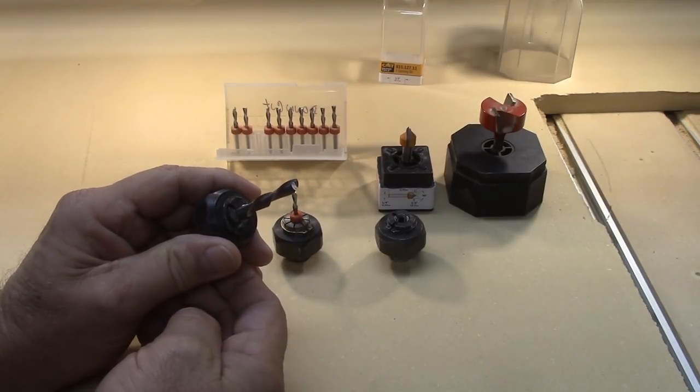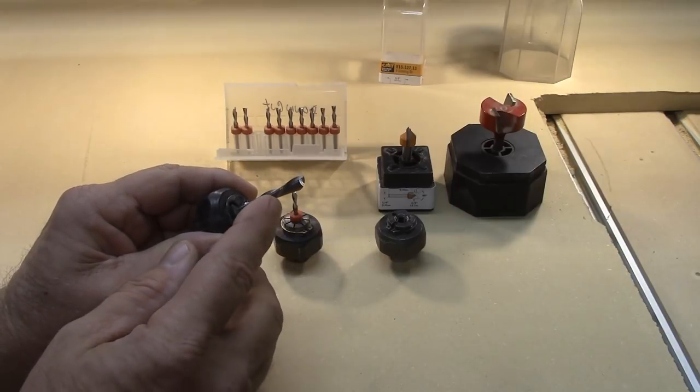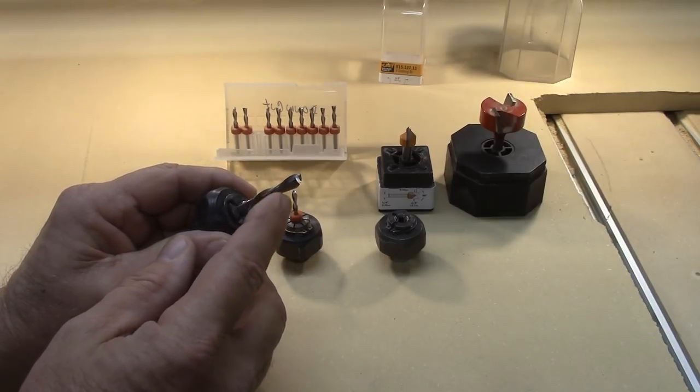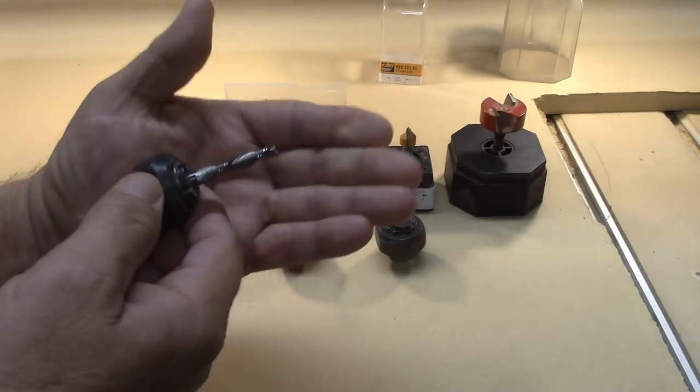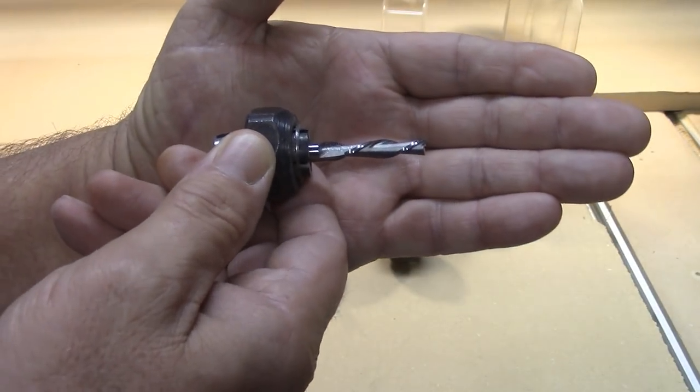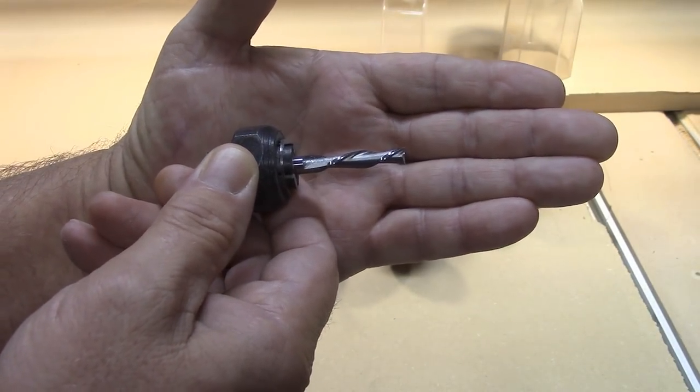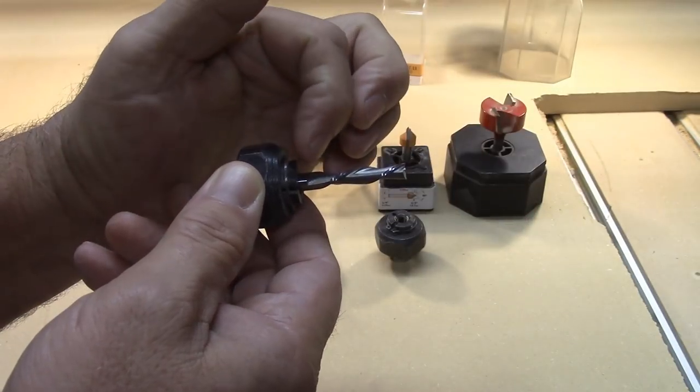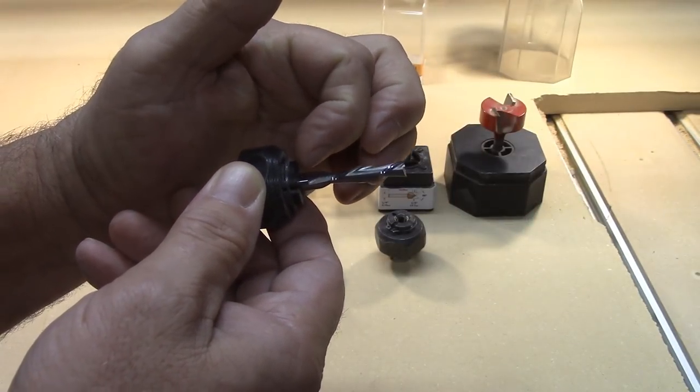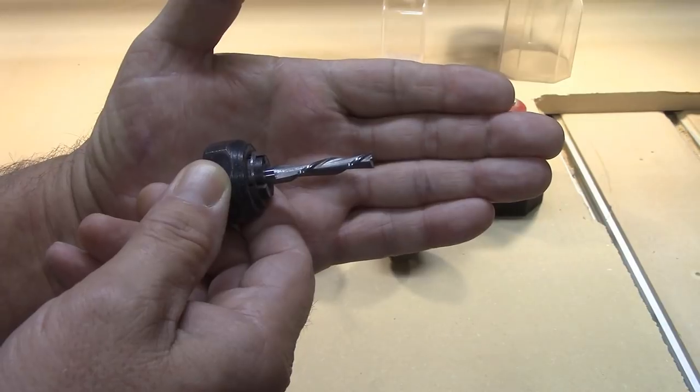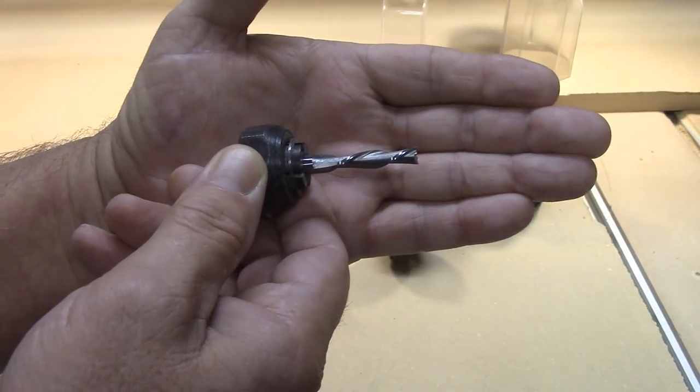And again, I can tell that it's a down cut spiral because the cutting edge is on the bottom of the spiral. But if you look in here at how much of the shank I have in the collet, you can see that the cutting edge stops roughly an eighth of an inch away from going into the collet itself.